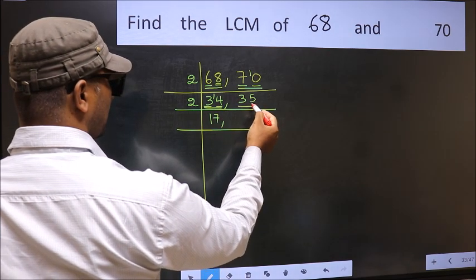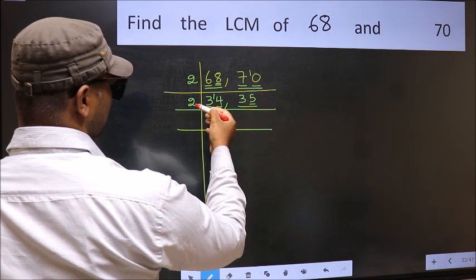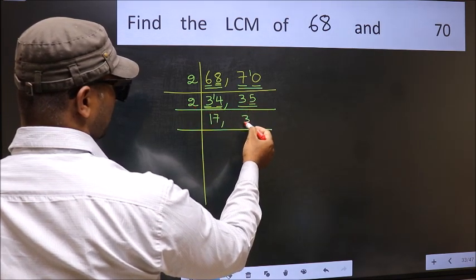The other number 35, last digit 5, not even. So this is not divisible by 2, so you write it down as it is.